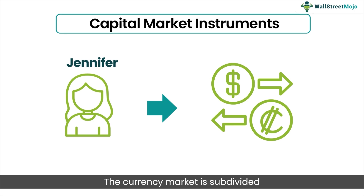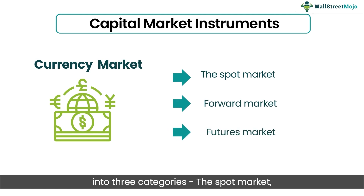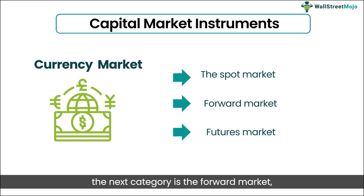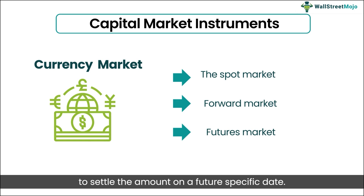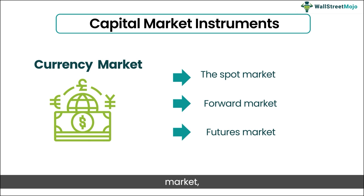The currency market is subdivided into three categories. The spot market, where the exchange rates are real-time and settle in two days. The next category is the forward market, where the parties agree to settle the amount on a future-specific date. And lastly, the futures market — unlike the forward market, it is also predetermined but undergoes public trading.